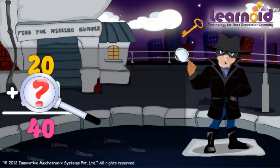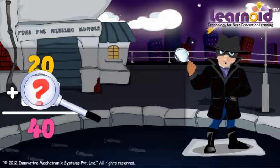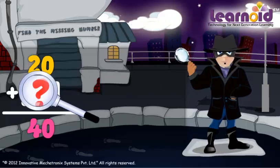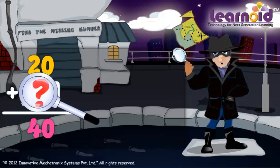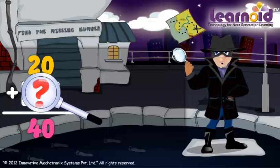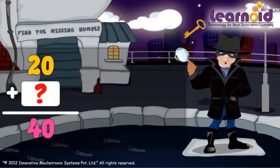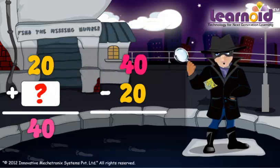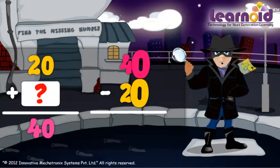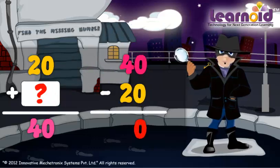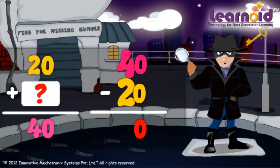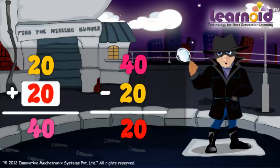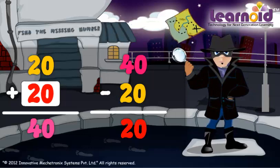If we have to find the second number, we have to subtract the first number from the sum of two numbers. 0 minus 0 is 0. 4 minus 2 is 2. The missing number is 20.